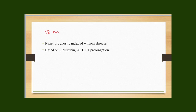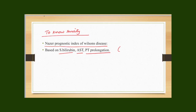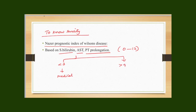To assess the severity of Wilson's disease, there is a score called the Nazer Prognostic Index, based on serum bilirubin, serum AST level, and PT prolongation. The score ranges from 0 to 12. If the score is less than 7, the patient can be managed with medical therapy (zinc plus trientine). If the score is more than 9, the prognosis is poor and the patient requires immediate liver transplantation. If the score is between 7 to 9, whether to give medical therapy or liver transplantation is based on clinical judgment.